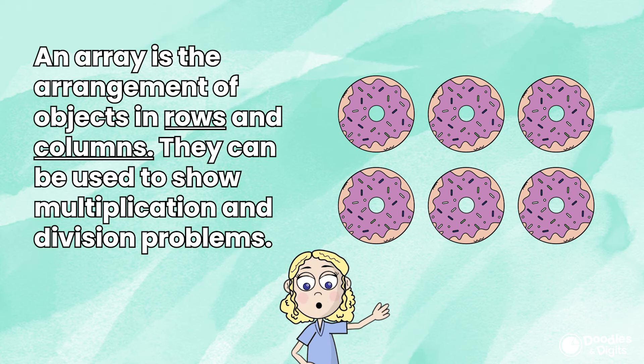Look, here's an array right now. You can see that it's broken down by columns and rows. What equation do you think this array is showing? This array is showing 3 by 2. 3 times 2 because there's 3 columns and 2 rows.